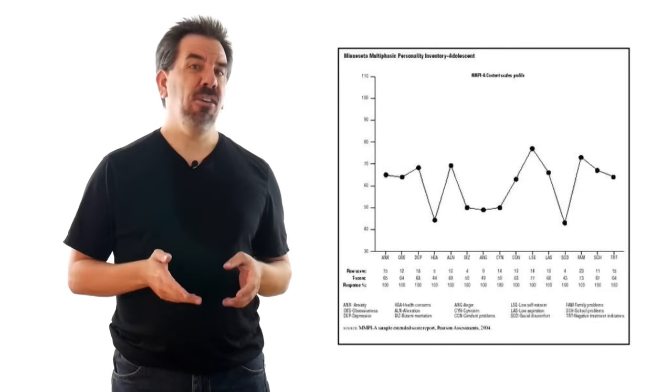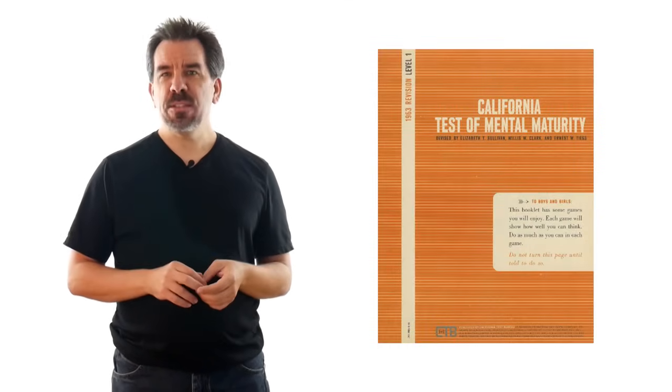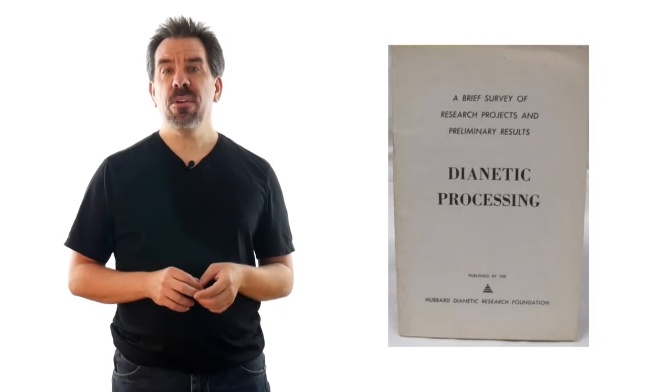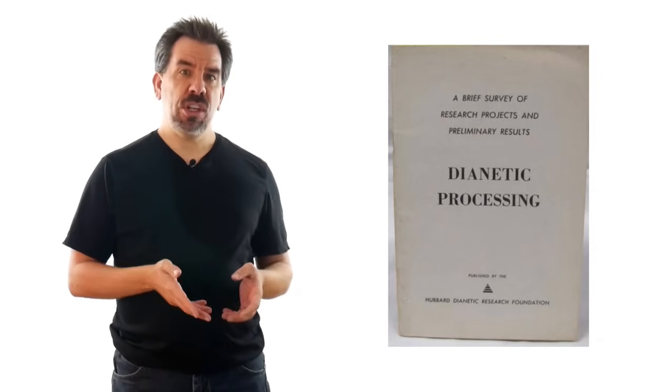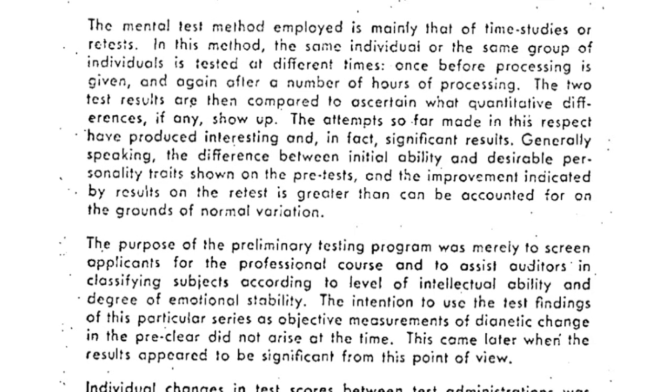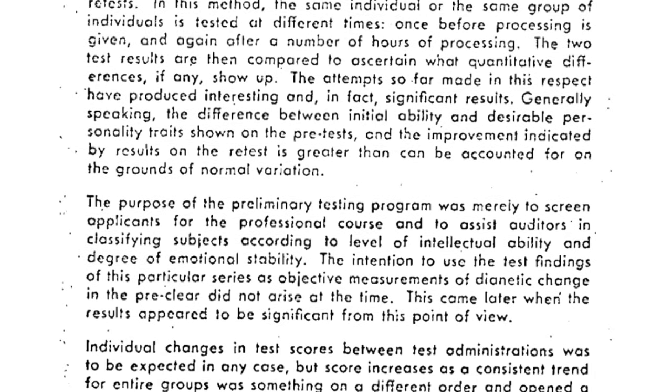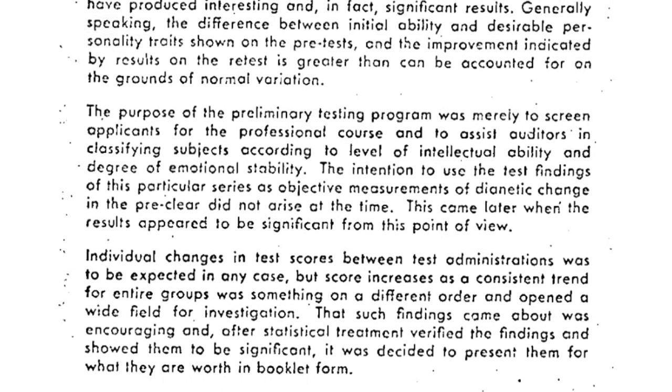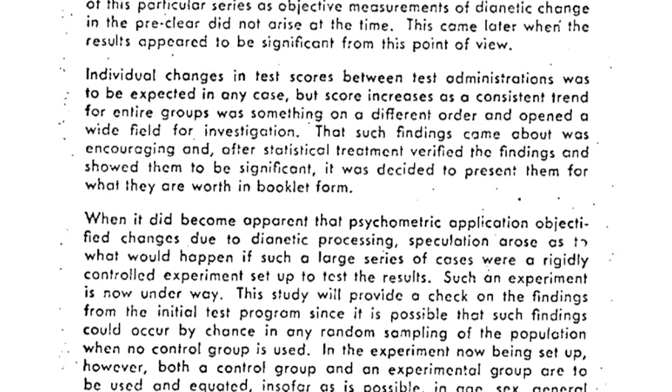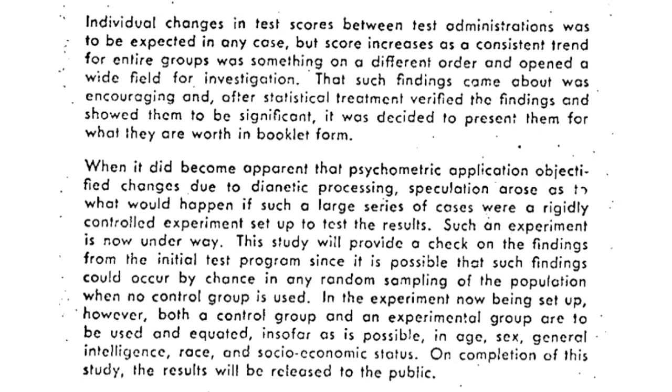Various standardized tests were used including the Minnesota Multiphasic Personality Inventory, the California Test of Mental Maturity for Adults, the Brunreiter Personality Inventory, and the Otis Tests of Mental Ability. A booklet was published by the Hubbard Dianetics Research Foundation in January 1951 to show positive changes in these test scores as a result of Dianetic processing. The authors took great pains to state that they had not run rigidly controlled experiments to test Dianetics results, which of course would be something any science worth its name would actually do to present validation of its results.